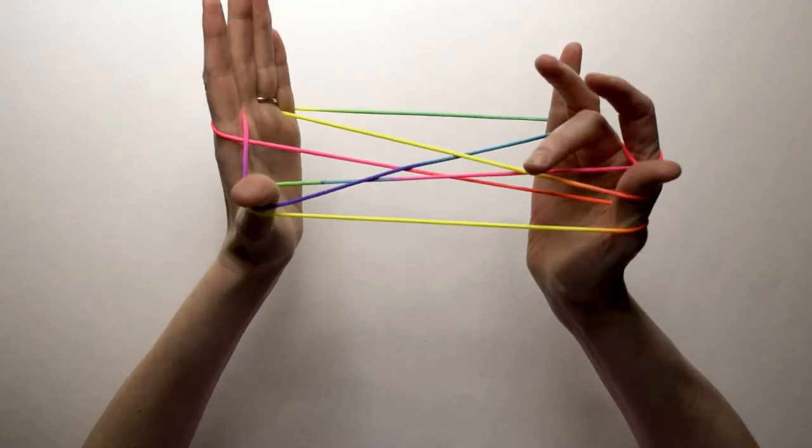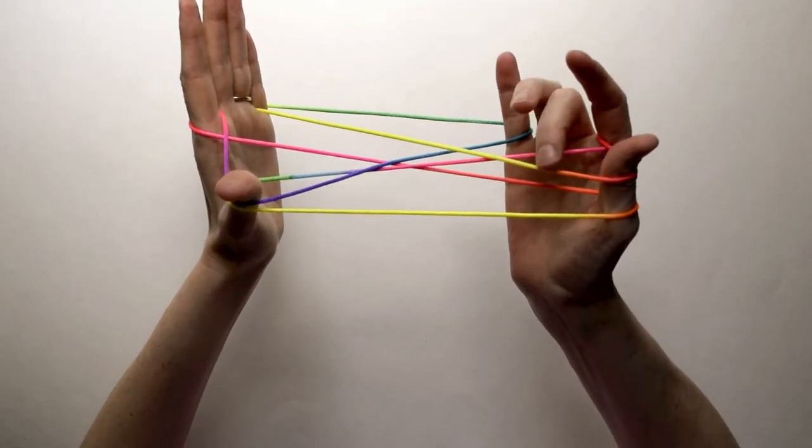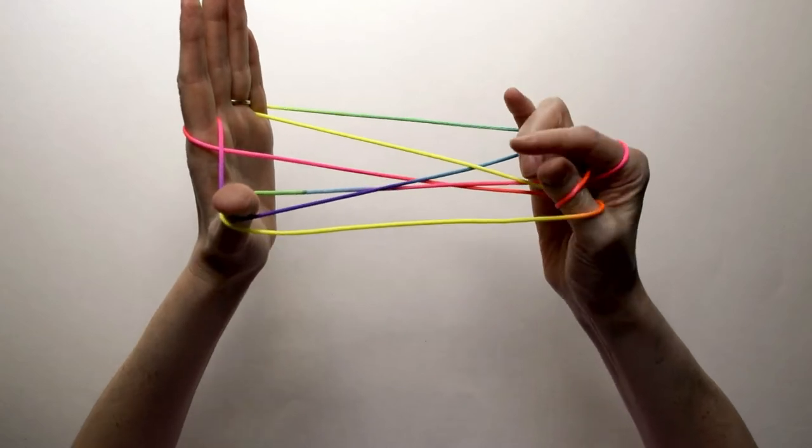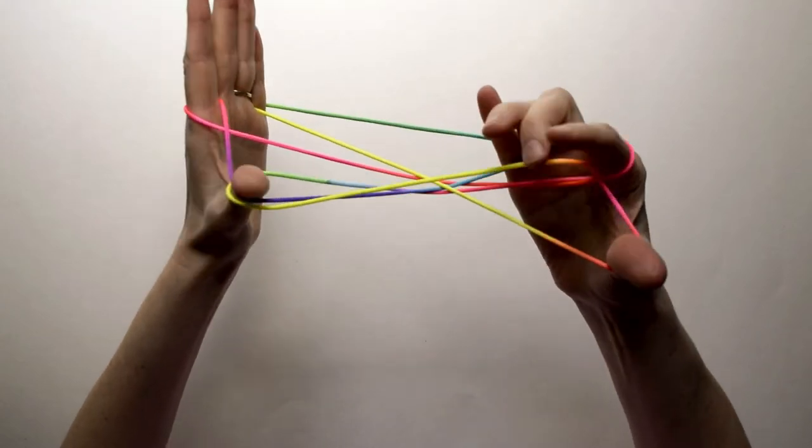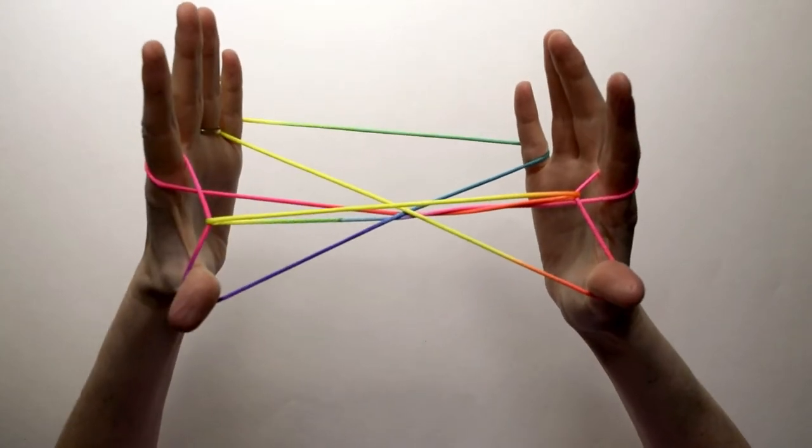Now you're going to take the loop on the bottom, I'm pointing to the yellow one here underneath, you're going to take it and roll your thumbs out so that that loop comes off your thumbs. You can use your other hands to pull it up or just roll your thumbs through.